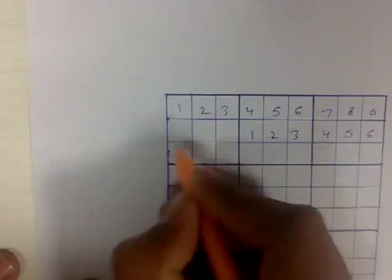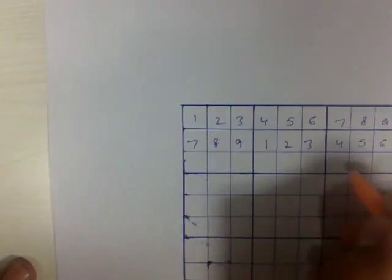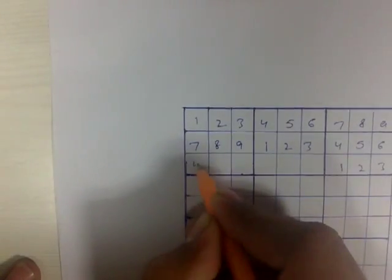Pair them in a 3 right here. 1, 2, 3, 4, 5, 6, 7, 8, 9. Now, 1, 2, 3, 4, 5, 6, 7, 8, 9. Now, 1, 2, 3, 4, 5, 6, 7, 8, 9.